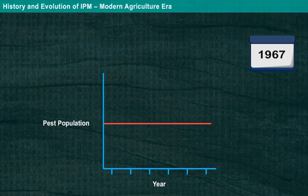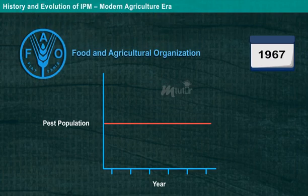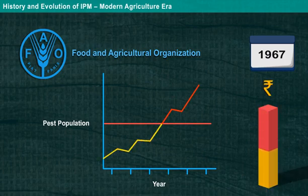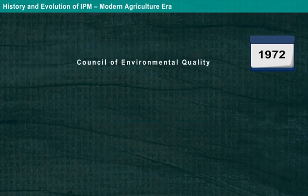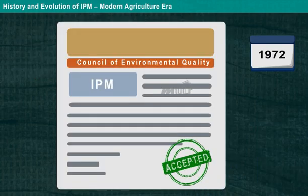In the year 1967, the Food and Agricultural Organization (FAO) also defined pest management as maintaining pest population levels in a compatible manner below those causing economic loss. The Council of Environmental Quality (CEQ) accepted the term IPM in the year 1972 and defined it as follows.